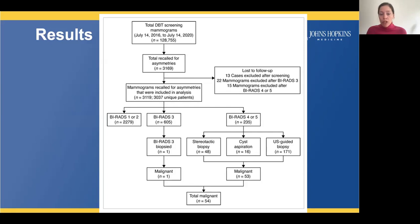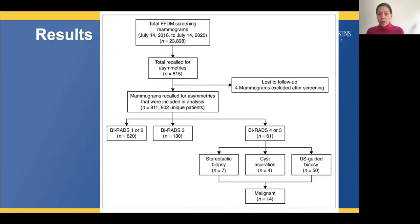The flow diagrams show the number of total screening mammograms for DBT performed during the study period — over 120,000. Over 3,000 were recalled for a 1-view asymmetry, and we ultimately included just over 3,000 mammograms from over 3,000 unique patients not lost to follow-up, with a total of 54 malignancies diagnosed. For FFDM screening mammograms, we had almost 24,000 mammograms, with 815 recalled asymmetries. Four were excluded due to loss to follow-up, leaving 811 studies in 802 unique patients, with 14 malignancies found.